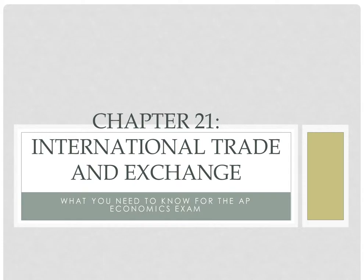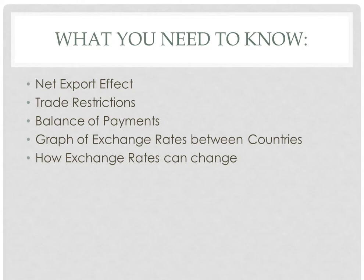Greetings! My name is Dylan and this is the final chapter of the Barron's AP Economics book, Chapter 21, and I will be covering what you need to know for the AP exam. This chapter is about international trade, and you should know what trade restrictions are, what the net export effect is, how currency exchange rates can change, what a graph of exchange rates looks like, and what the balance of payments are.